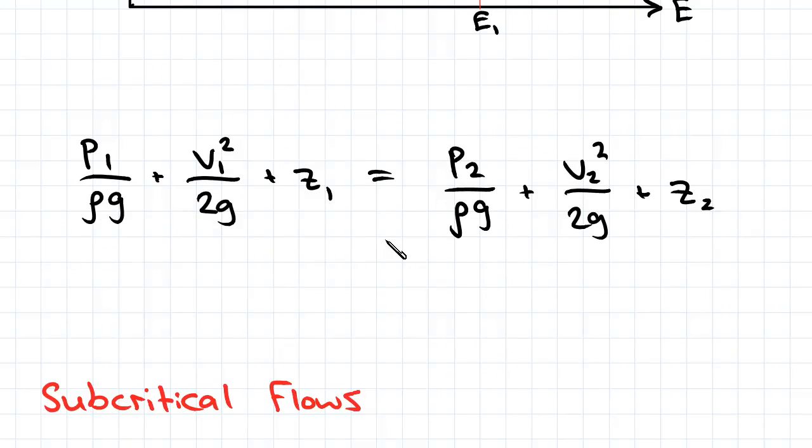But remember we found the Bernoulli equation in terms of specific energy, which simplified down to e2 is equal to e1 minus delta z.